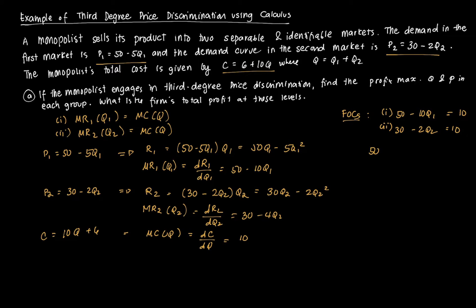Solving the first FOC: 50 minus 10 equals 10Q1, so 40 equals 10Q1. Dividing both sides by 10 gives Q1 star equal to 4.